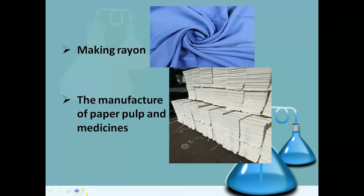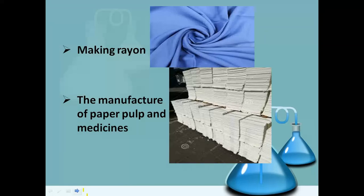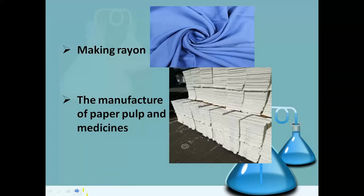The next use of sodium hydroxide is the manufacture of paper pulp and medicines. Paper pulp جو ہے وہ raw paper material ہوتا ہے جو fine paper کی making کے لیے استعمال کیا جاتا ہے۔ اور drugs وغیرہ کی formation میں بھی ہم sodium hydroxide کو استعمال کرتے ہیں۔